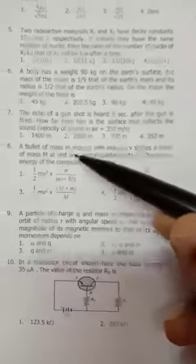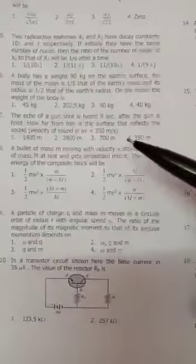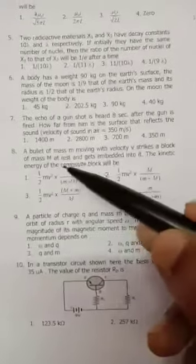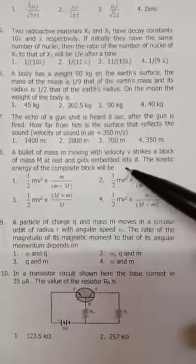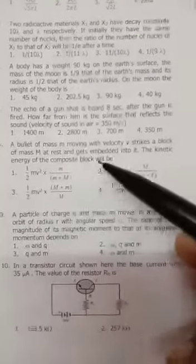A bullet of mass m is moving with velocity v, strikes a block of capital M at rest and gets embedded in it. What is the kinetic energy of the composite system?